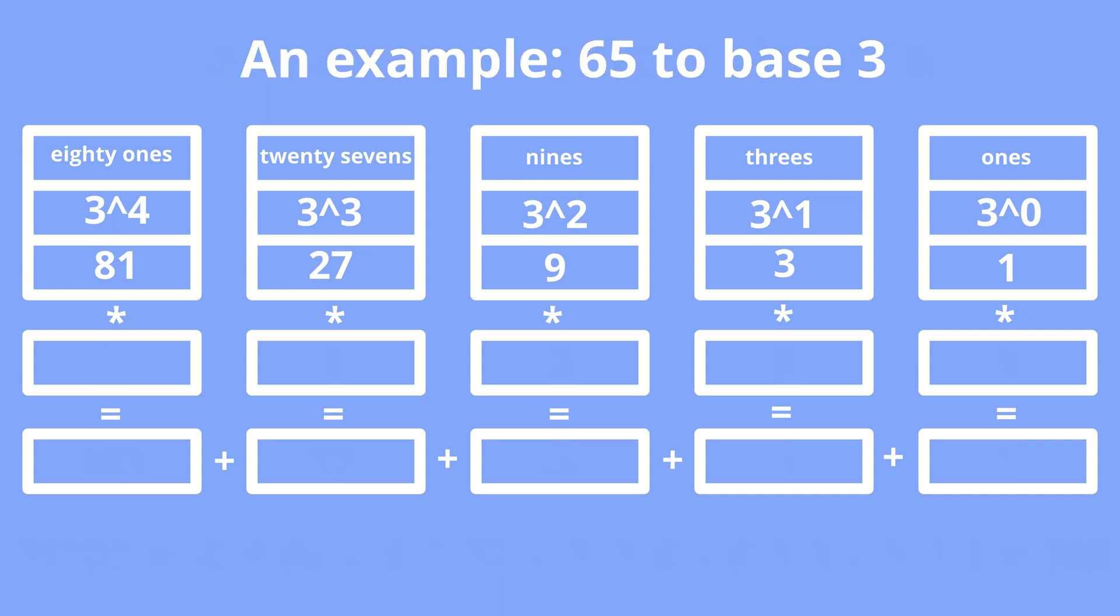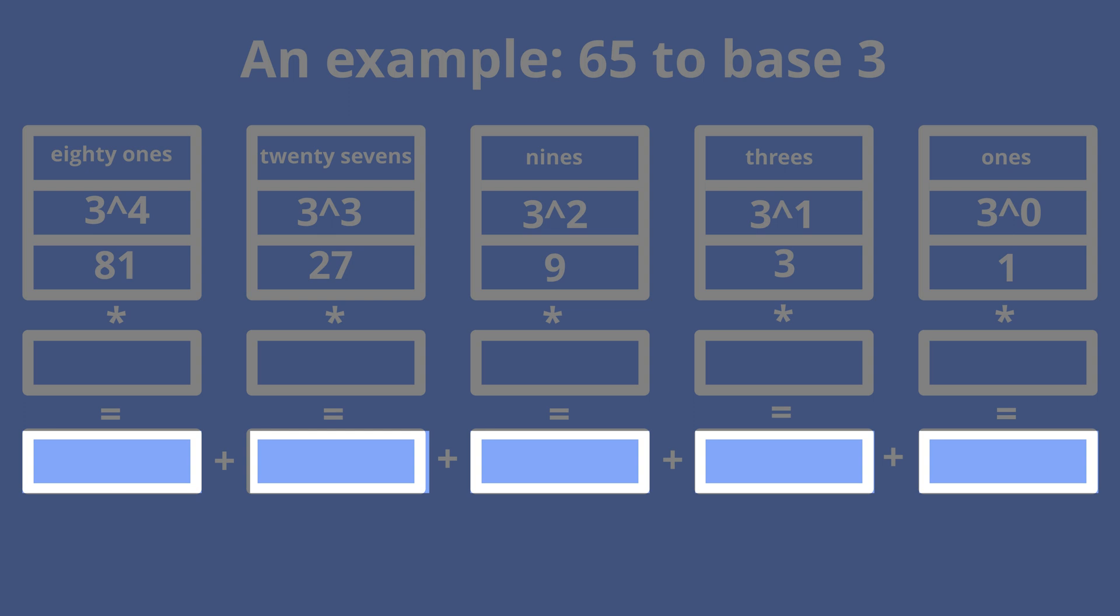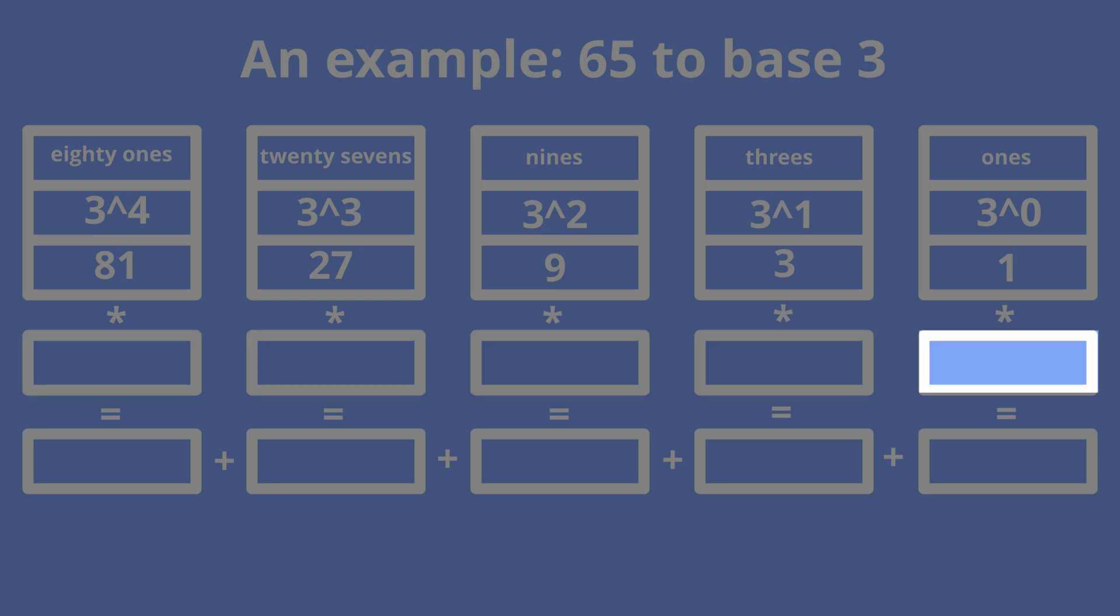Now let's for example convert the number 65 from the base 10 number system to the base 3 number system. To do this we need to fill with digits 0, 1, and 2 these positions in such a way that the sum of these positions will give us 65. We don't need to try all possible variants of zeros, ones, and twos.